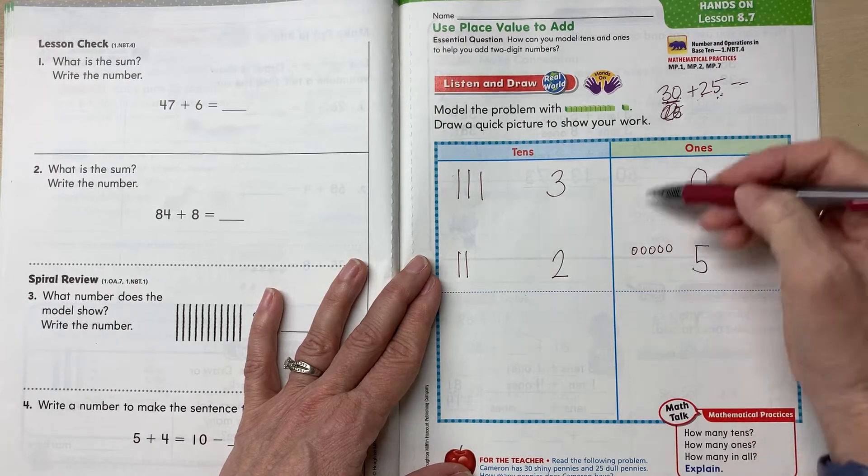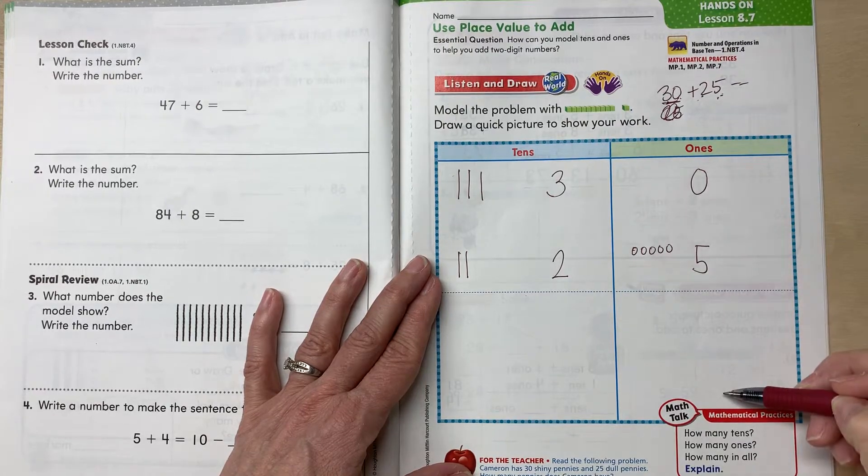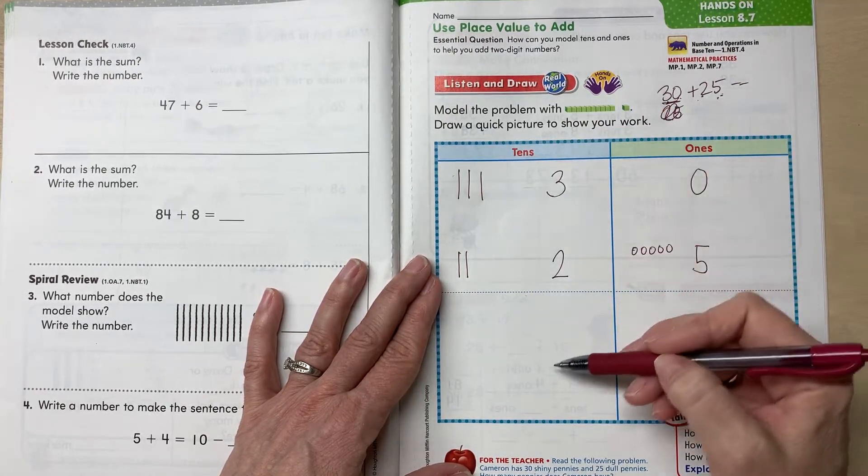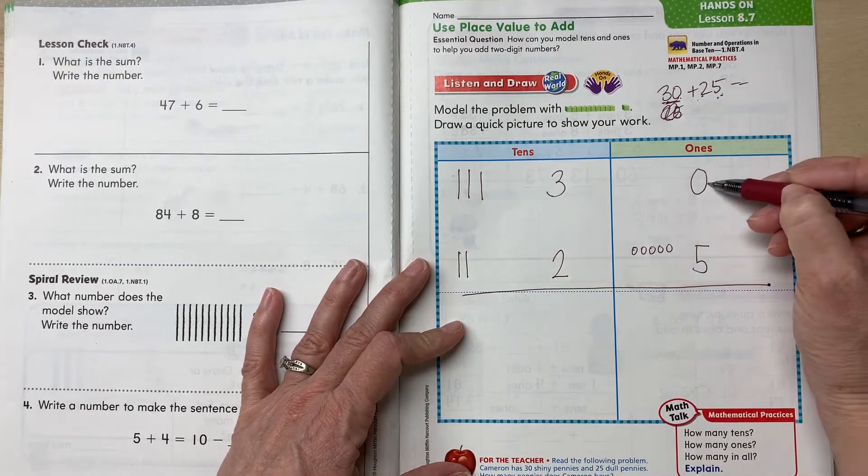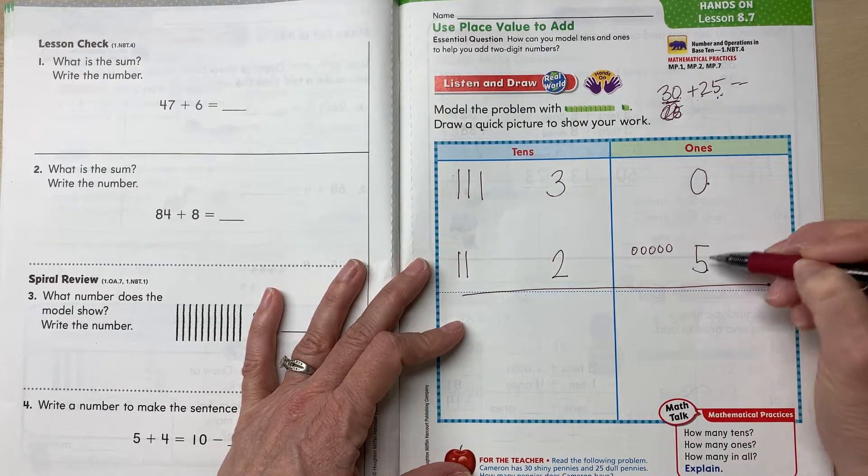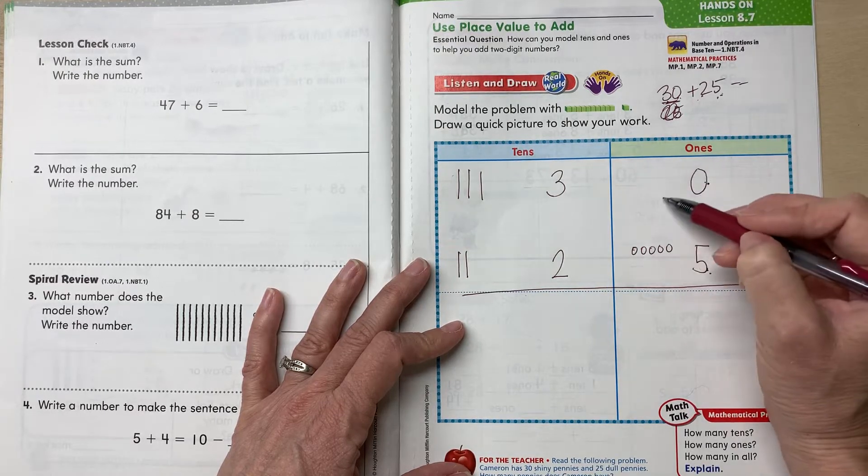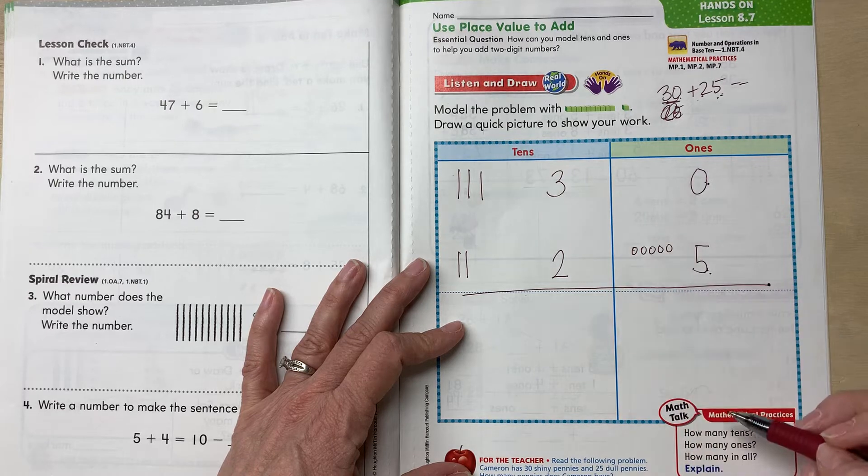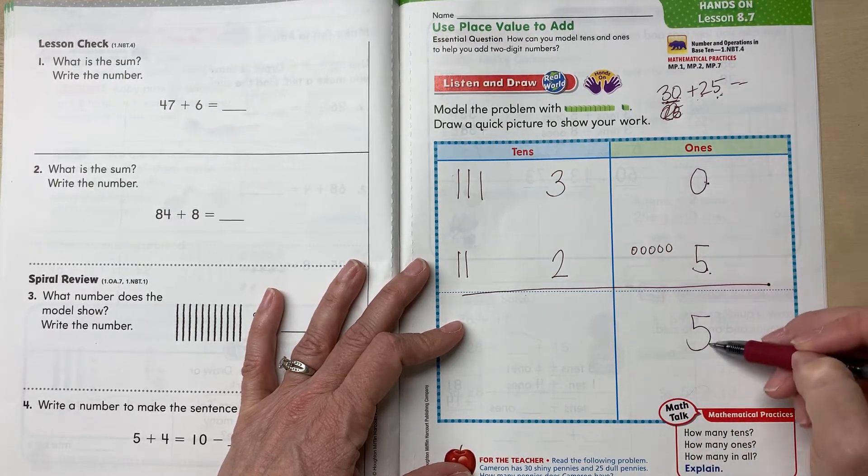So like we've talked about already with place value strategy, you're going to add your ones first, and then you're going to add your tens. So this is our line here. So zero ones plus five ones. Let's add these two together first. What is zero plus five? You can see the picture. Zero plus five is what? Yeah, it's five. Anything plus zero is still itself.